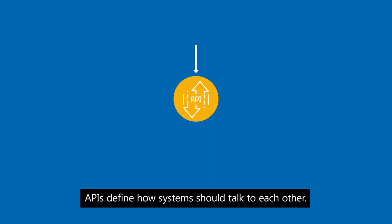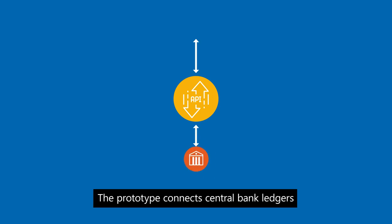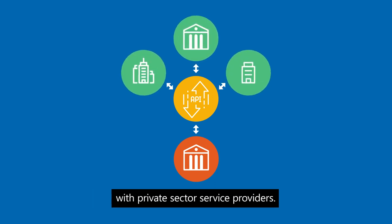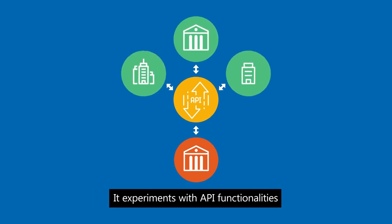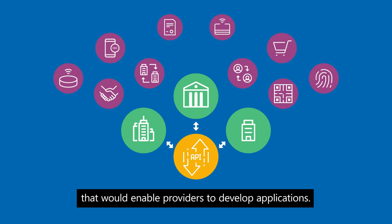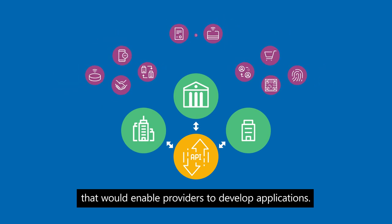APIs define how systems should talk to each other. The prototype connects central bank ledgers with private sector service providers, and experiments with API functionalities that would enable providers to develop applications.